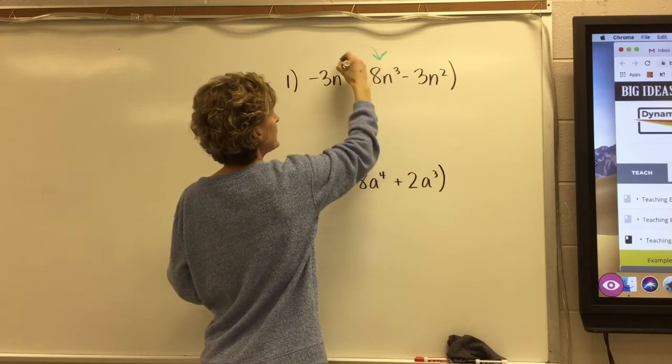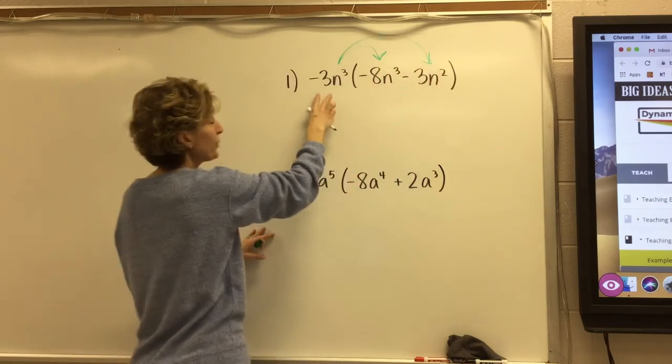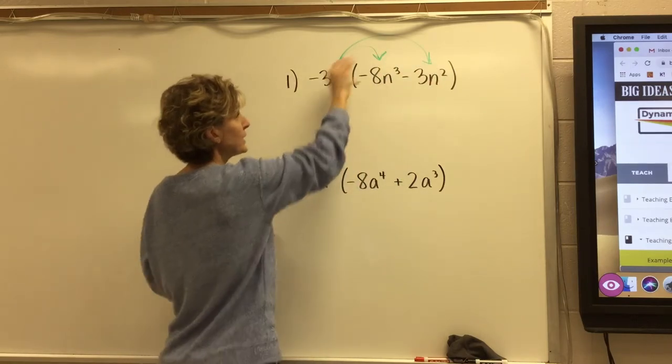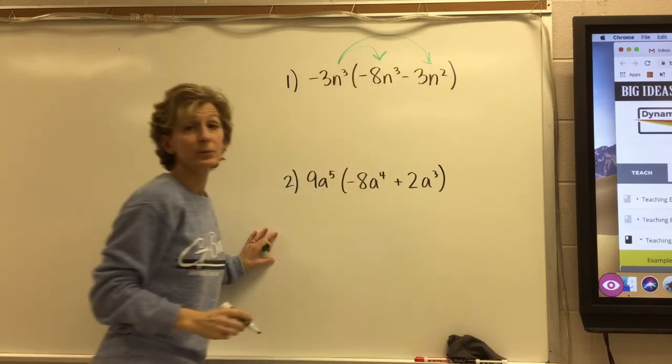Alright, so this is problem number one, and I just need to bring this whole thing, negative 3n to the third, into the parentheses.